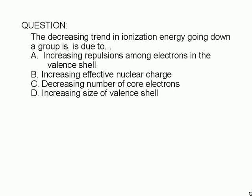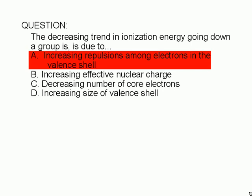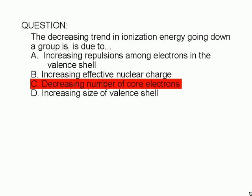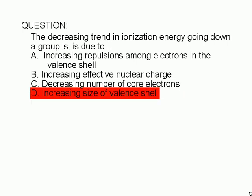The decreasing trend in ionization energy going down a group is due to: A. Increasing repulsions among electrons in the valence shell, B. Increasing effective nuclear charge, C. Decreasing number of core electrons, or D. Increasing size of valence shell.